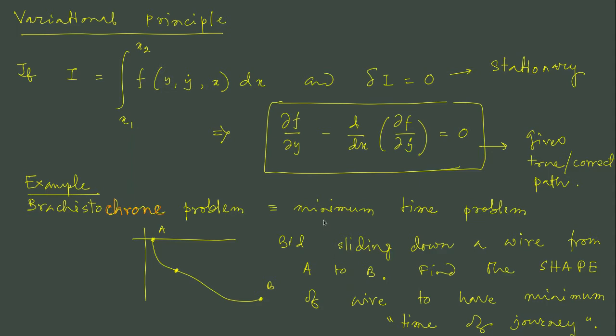What we look at is the brachistochrone problem or minimum time problem. The problem is extremely easy to state. Suppose this is a wire, a wire along which this bead is moving under gravity. If we just let it go, it will follow this path.